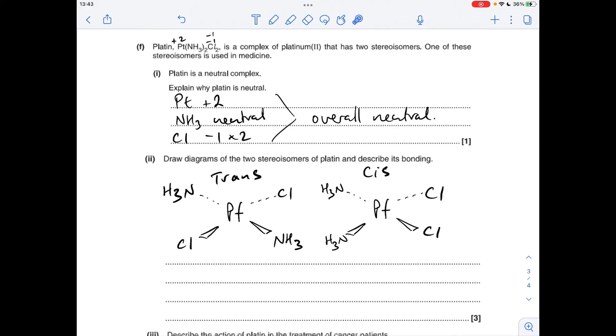In terms of the bonding, what kind of bonds have we got between the ligands and this platinum 2+ ion? It's coordinate bonding. So the ligands are providing a pair of electrons to bond to the central transition metal ion.